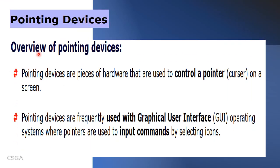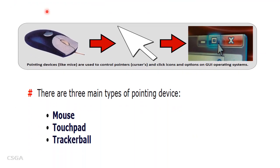Pointing devices. Pointing devices are the pieces of hardware used to control a pointer or cursor on a screen. They are frequently used with a graphical user interface, GUI, operating system, where pointers are used to input commands by selecting icons. There are three main types of pointing device: mouse, touchpad, and trackball.